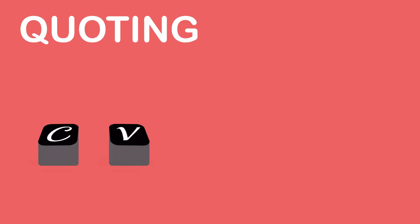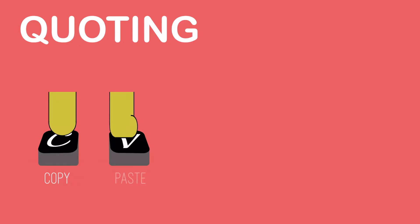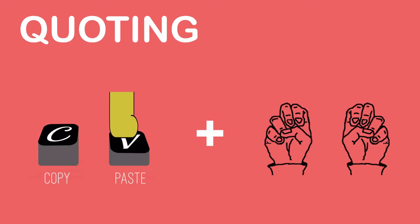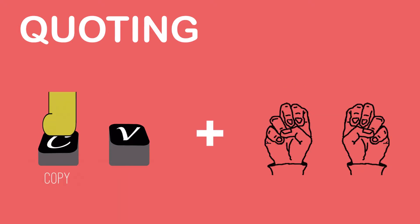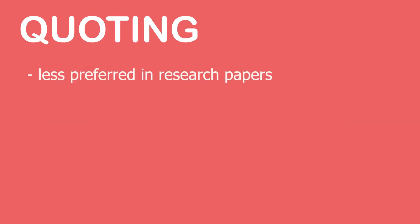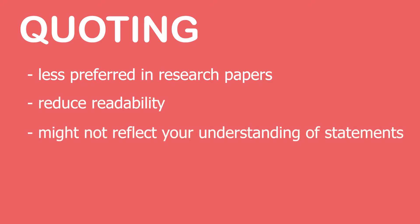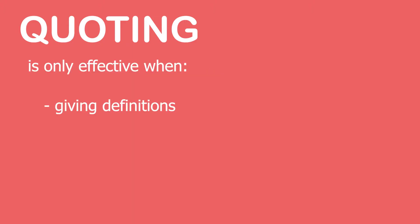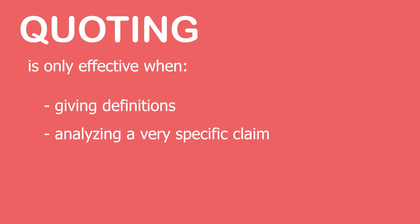We should also note that paraphrasing is different from quoting. Quoting is copying your source word by word and then adding quotation marks. These are less preferred in research papers as it will reduce readability and might not reflect your understanding of their statements. Quoting is only effective when giving a definition and analyzing a very specific claim.